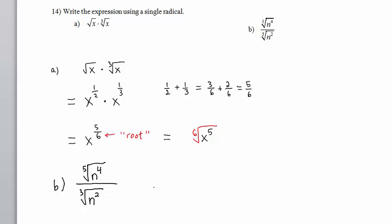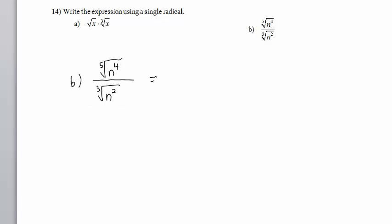Let's look at Part B. As in Part A, we will convert each radical to the form having a fractional or rational exponent. In the numerator, we have n raised to the 4 fifths power. In the denominator, we have n raised to the 2 divided by 3 power.